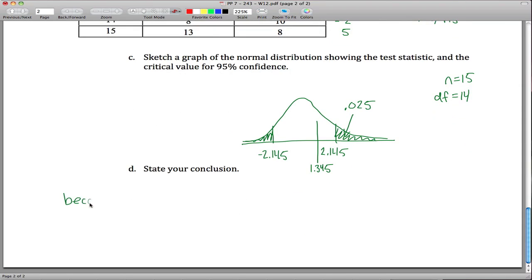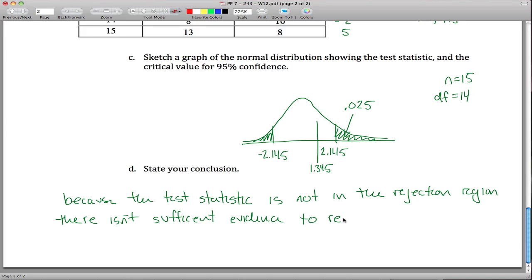So finally our conclusion would be similar to above, because the test statistic is not in the rejection region, there is not sufficient evidence to reject the null hypothesis. It's hard to write and talk. But that's our conclusion, so that's the end of the perfect problem.